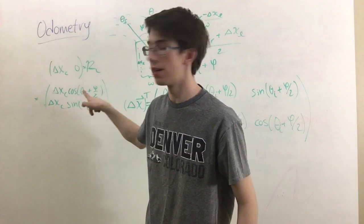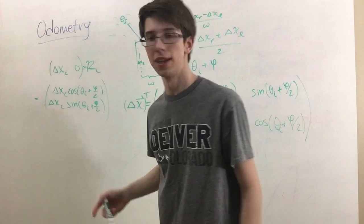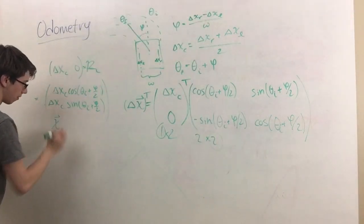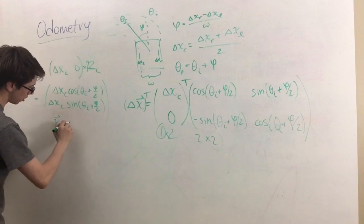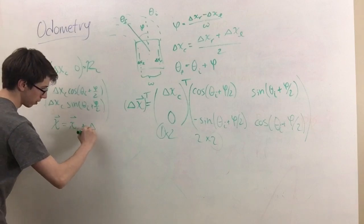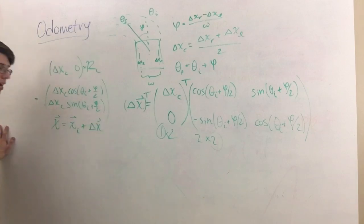And so this is our vector, this is our delta x vector. And so how do we determine our current location representative of x vec? Well, that's just equal to our initial x plus our delta x.